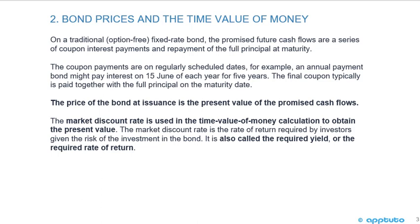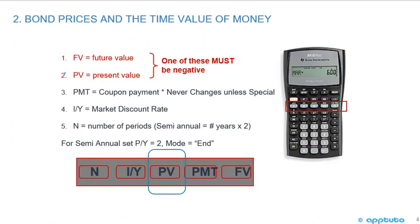The market discount rate is used in the time value of money calculation to obtain the present value. The market discount rate is also the rate of return required by investors given the risk of the investment of the bond. It is also called the required yield or the required rate of return.